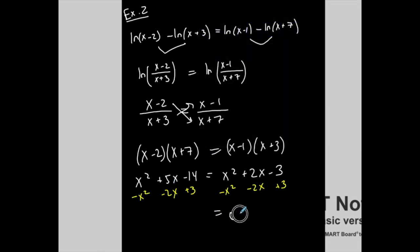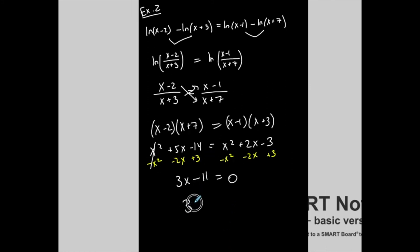So it simplifies nicely. So the right hand side, it becomes zero. And the left hand side, 5x minus 2x is 3x. Negative 14 plus 3 is minus 11. And it's a nice easy linear equation. Add 11 to both sides. Divide by 3. 11 thirds is my answer.